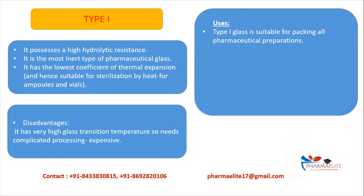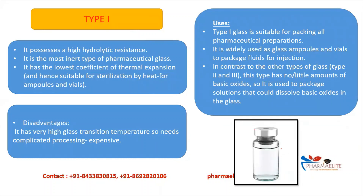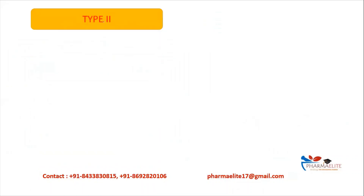Type 1 glass is suitable for all pharmaceutical preparations because it is the most inert. It is widely used as ampoules and vials to package fluids for injections. Unlike Type 2 and Type 3, it has no or very little basic oxide, so it does not leach into formulations. It can package acidic solutions that would otherwise dissolve basic oxides from the glass.